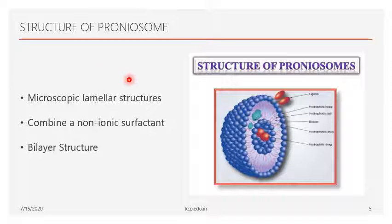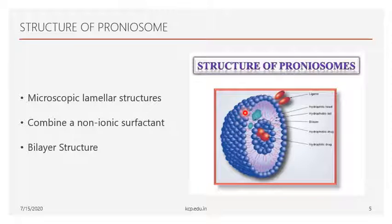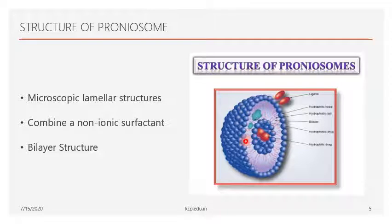Let's see the structure of proniosomes. The blue and brown ball-like structures represent non-ionic surfactants, which are especially used in the formation of proniosomes. They have a hydrophilic head at one end and a hydrophobic tail at the other, forming a bilayer structure with two layers of non-ionic surfactants. The red spherical component represents the hydrophilic drug present in the center, while the hydrophobic drug is located between the two layers.